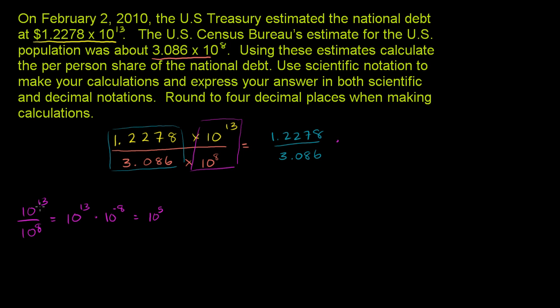Or another way to think about it, if you have the base in the denominator, you subtract the exponent. So it's 13 minus 8, 10 to the 5th. So it's this blue expression times 10 to the 5th. 10 to the 13th divided by 10 to the 8th is 10 to the 5th. 10 to the 5th power.